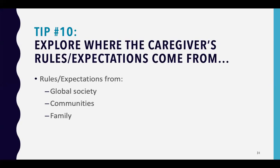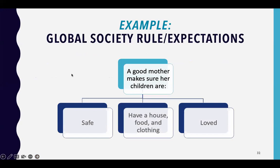Our rules come from global society, communities, and families. One global rule is that a good mother makes sure her children are safe, have a house, food, clothing, and are loved — that's something we all kind of expect. Another global rule is that we don't go out naked, though in some cultures certain parts of the body are not covered. Think about the global things that society uses to help form the various rules we have in our lives.